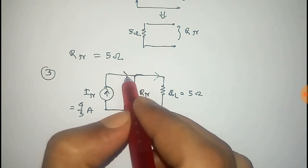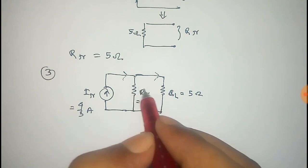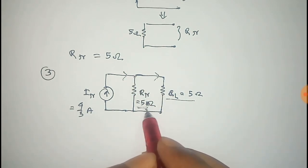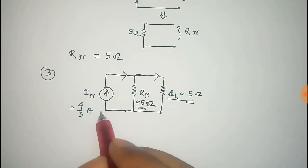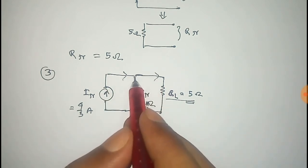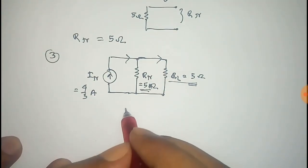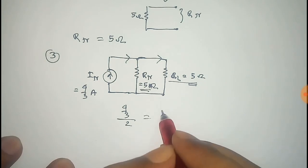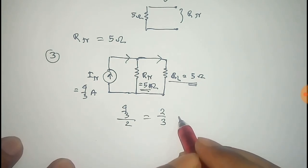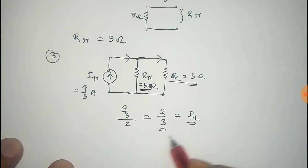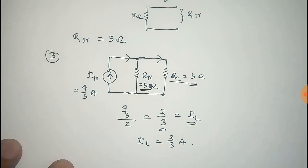At this point the current is distributed in two branches, and we have to find the current through the load resistor. Both resistances have the same value of 5 ohm, so the total current will be divided equally in two parts. The current in each branch is half, so that is 2/3 amperes. Thus we get the load current through the circuit, IL equals 2/3 amperes.